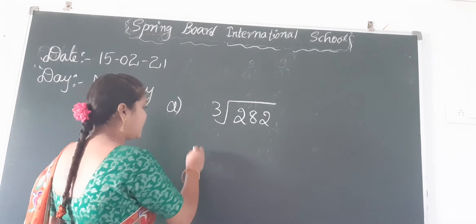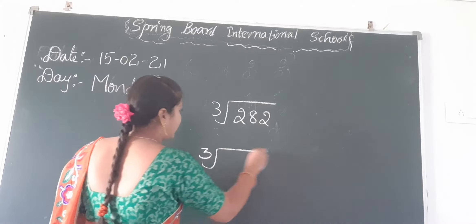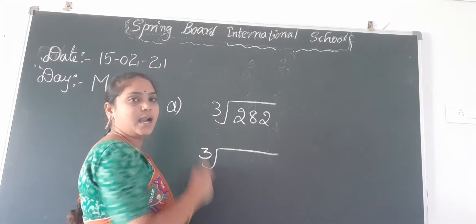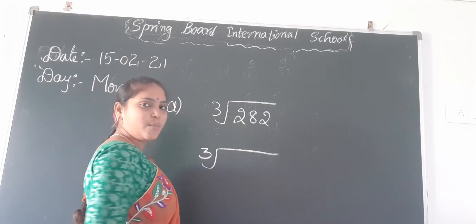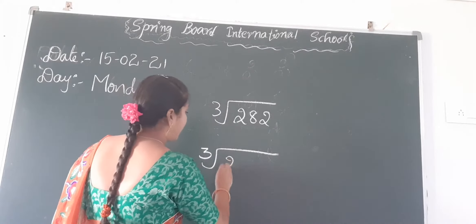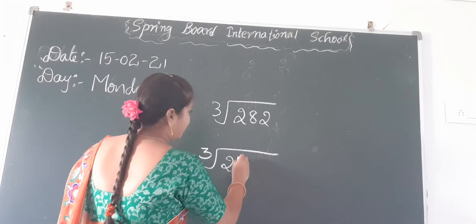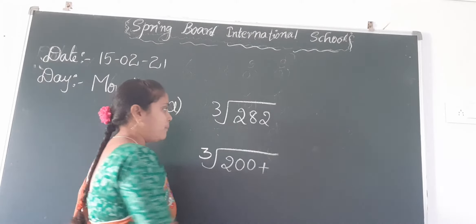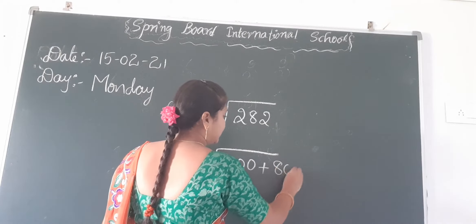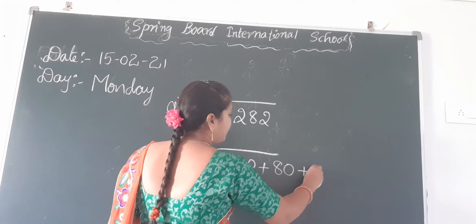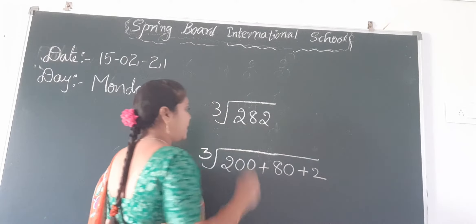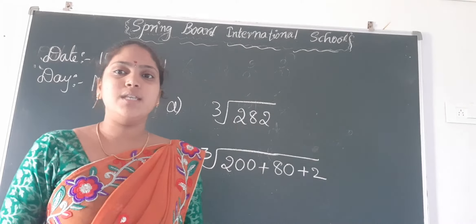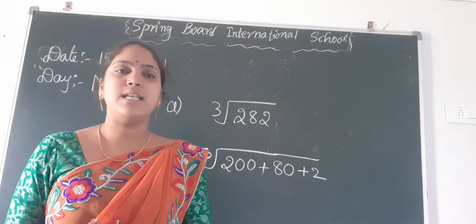First, find the expanded form of 282. The place values are 1, 10, 100. So the expanded form of 282 is 200 plus 80 plus 2. This is the expanded form of this number.